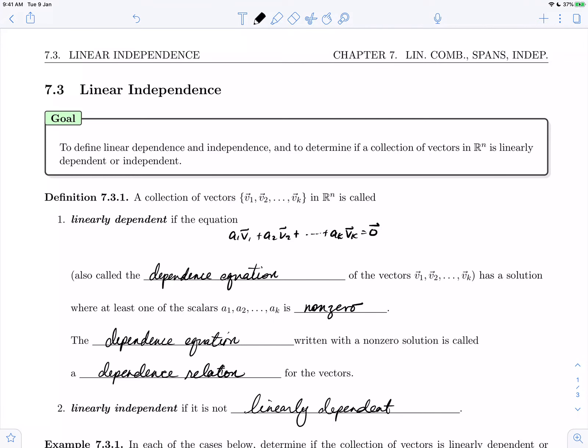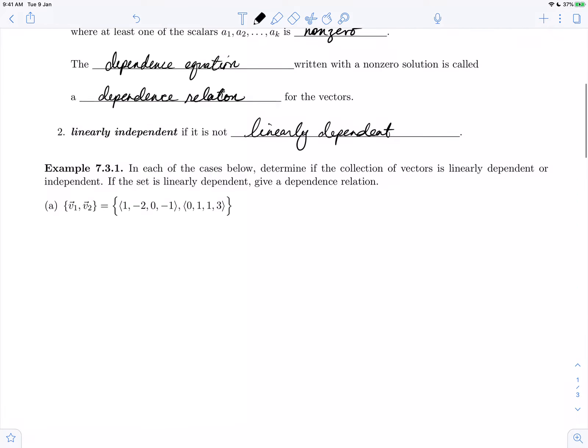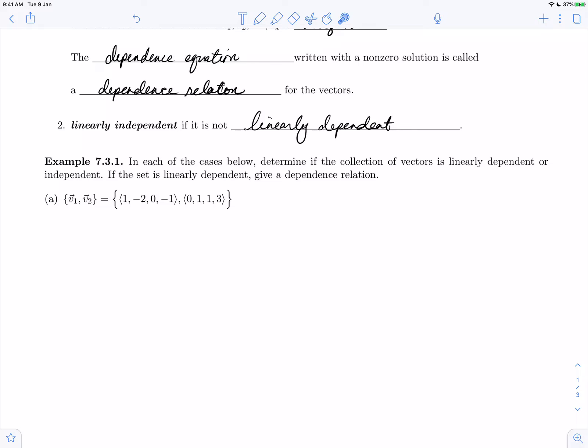Let's move to example 7.3.1. We're going to do part A in this video, and part B in the next video. The example says: In each of the cases below, determine if the collection of vectors is linearly dependent or independent. If it is linearly dependent, give a dependence relation.